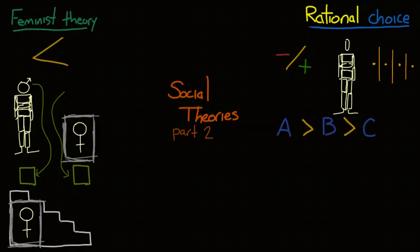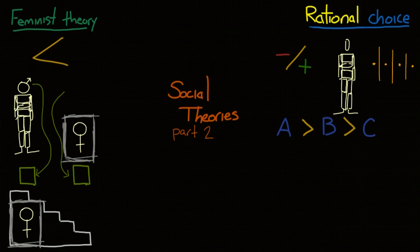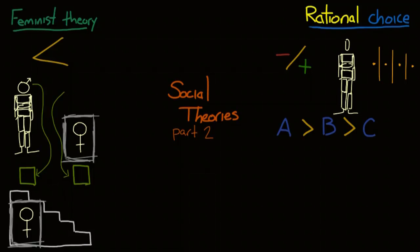Two: transitivity — that if A is preferable to B, and B is preferable to C, then A is also preferable to C. And three: independence of irrelevant alternatives — that if an additional choice is available, it won't change the relative ranking of the previous choices. If I suddenly have option X, B isn't abruptly better than A.